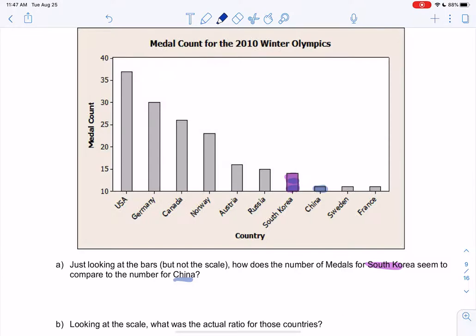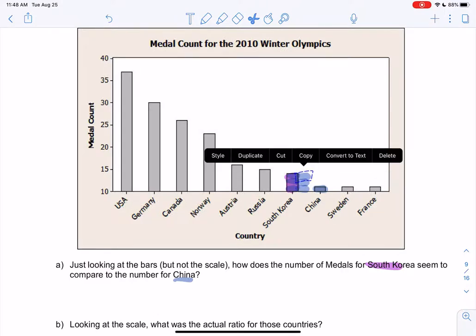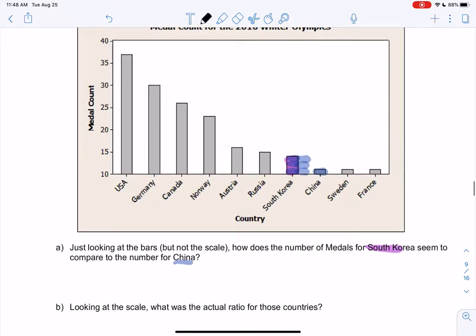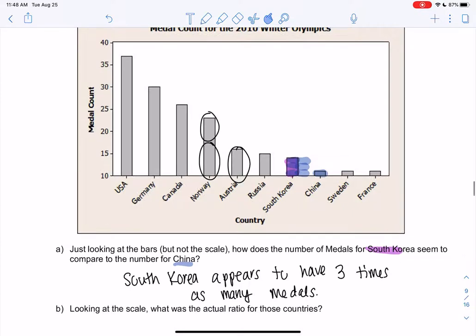So I'm not going to look at the scale. If I look really quickly, South Korea looks like it's about three times as big. If I were to take China and compare it to South Korea, it looks like it's about three times as big. So South Korea appears to have three times as many medals. When we look at a graph, we want to look really quickly. It looks like three times. It also looks like if I look at Austria compared to Norway, Norway looks twice as big. Those are things we want to be able to notice really fast. But if we actually look at the count, that's not true.